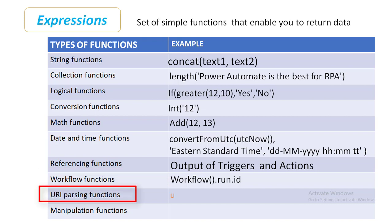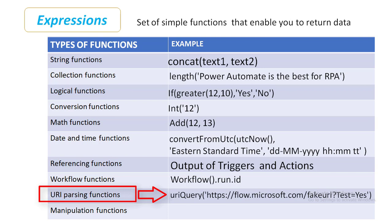Now URI parsing functions. These functions are used to dissect a URI that is passed in as a string. You use these functions to find the host, path, query, or other portions of the URI. For example, using uriQuery() on a URL like 'https://flow.microsoft.com/fakeurl?test=yes' — if you want to know the particular path or query string, you are going to use URI parsing functions.